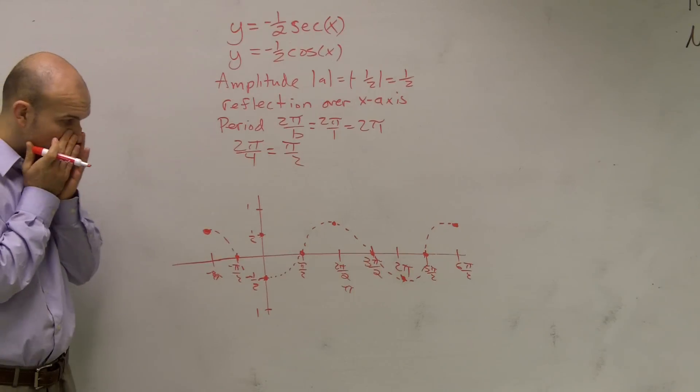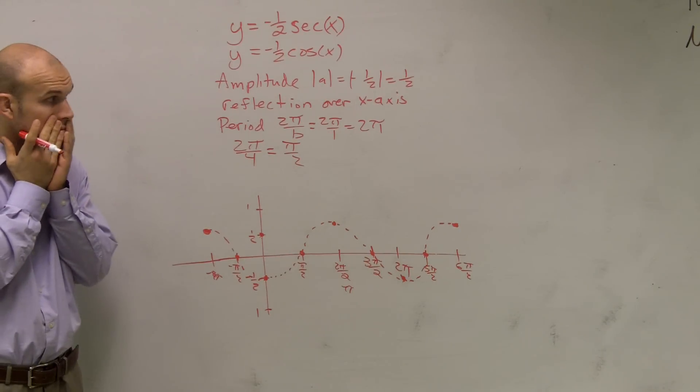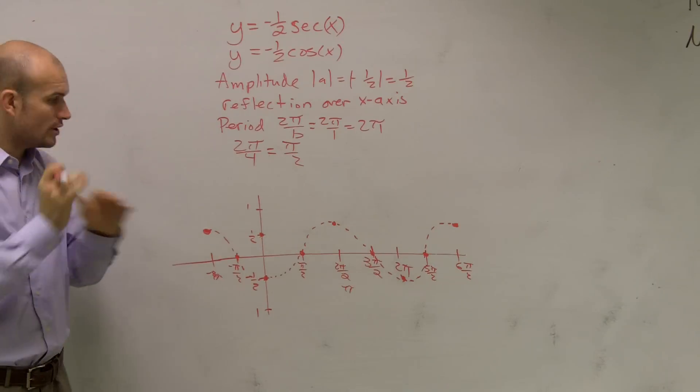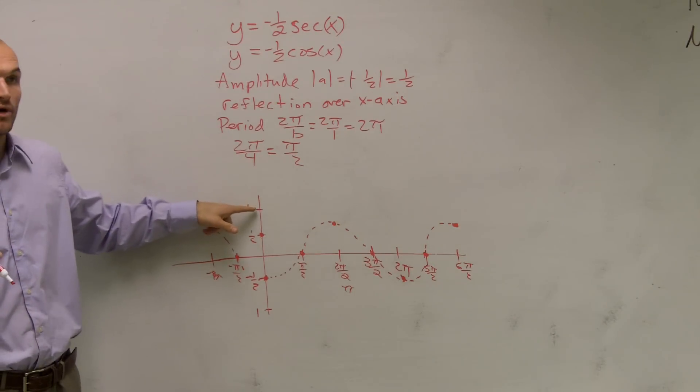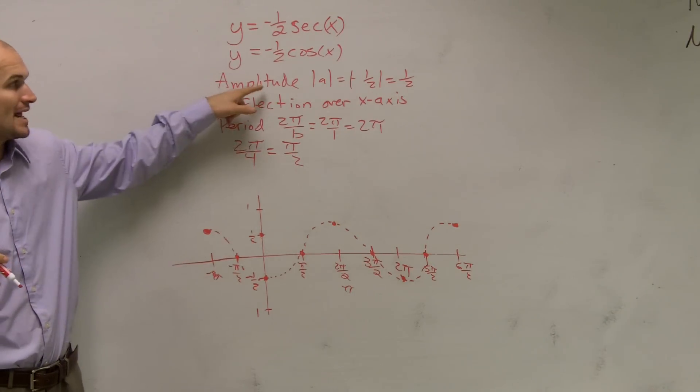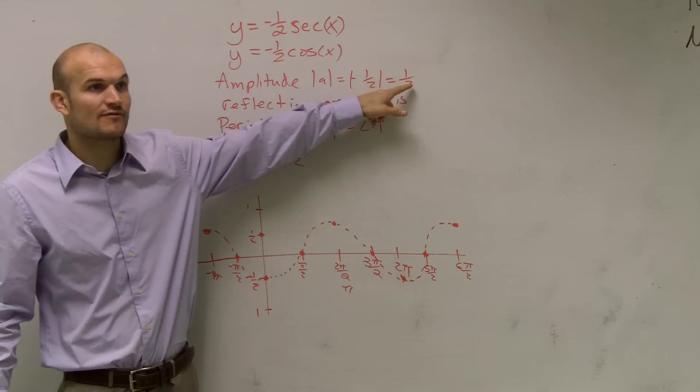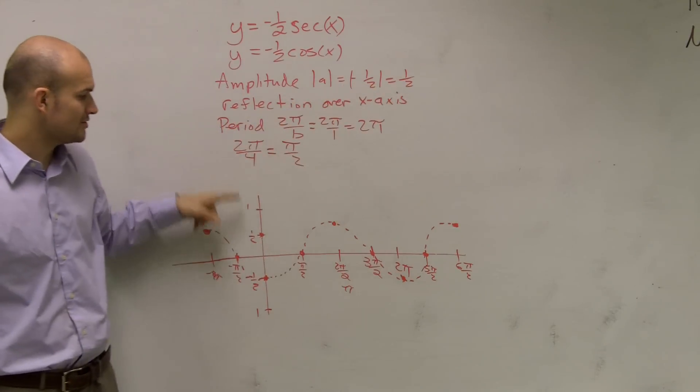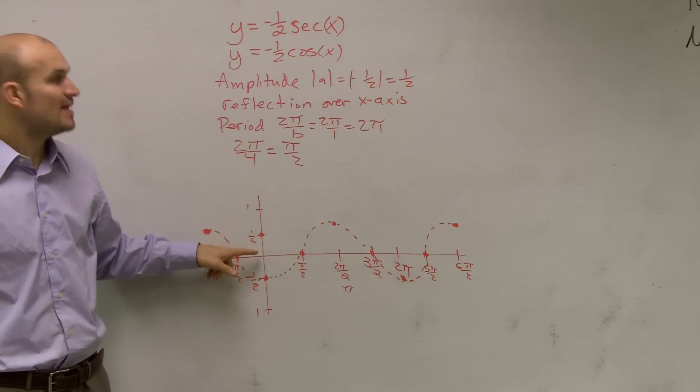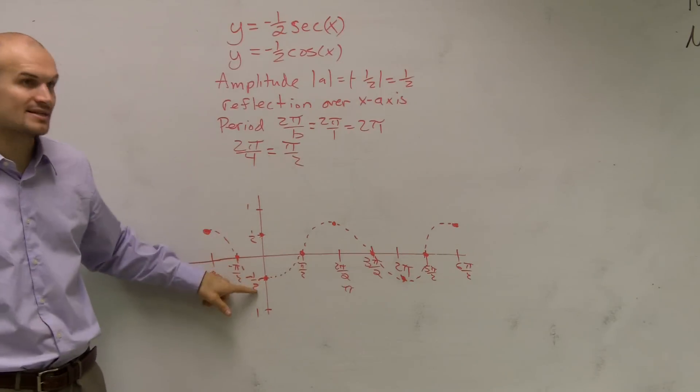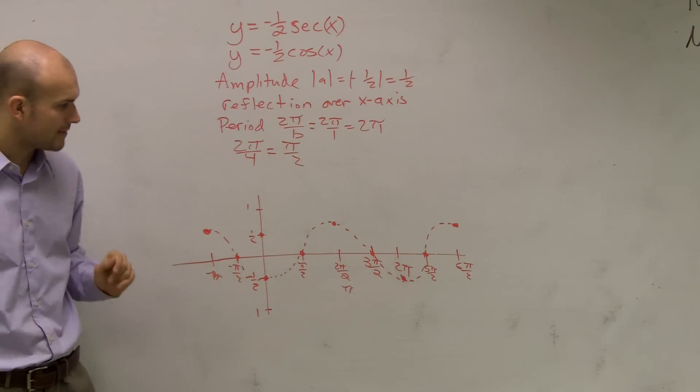I thought that it would start at 1, or the negative 1, not the one-half. It would. Remember your parent graph starts at 1, right? But then our amplitude changed it. Instead of our amplitude being 1, now our amplitude is at one-half. And then we had a reflection, so I reflected it down to the negative. Make sense?